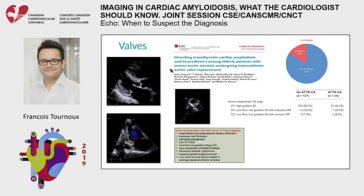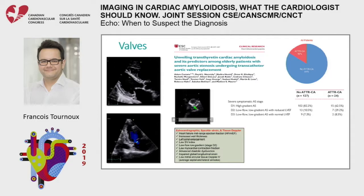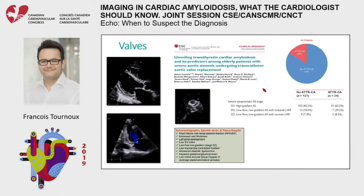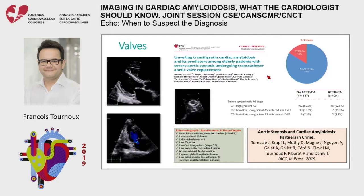The valves are thickened, and you can see mitral regurgitation and tricuspid regurgitation. Amyloid fibrils are also involved in the progression of aortic stenosis. A Columbia University paper actively screened patients with severe aortic stenosis undergoing TAVI and found that 16% had ATTR cardiac amyloid, especially in the group with low-flow, low-gradient aortic stenosis. So when reading a pre-TAVI echo, think about cardiac amyloidosis.